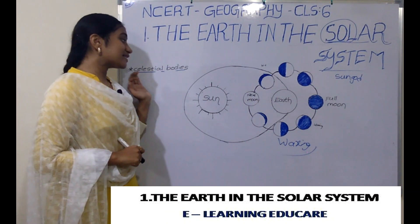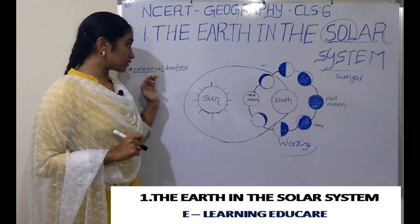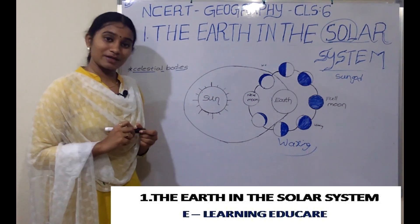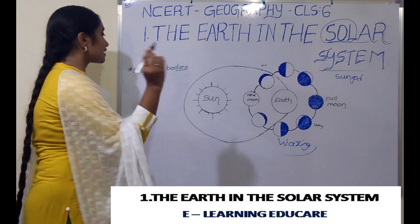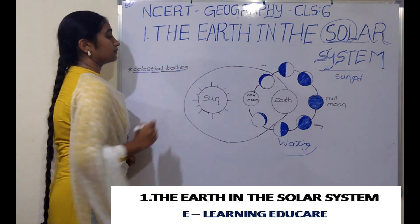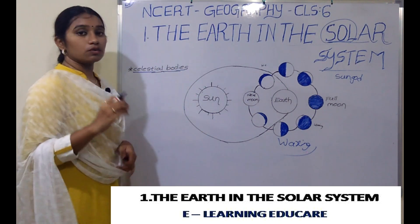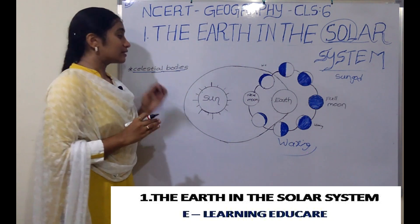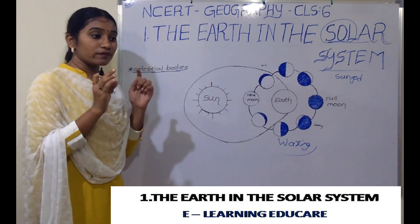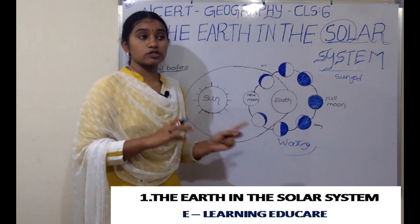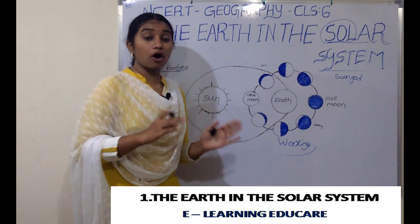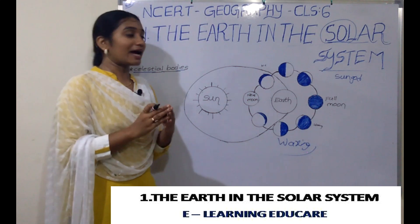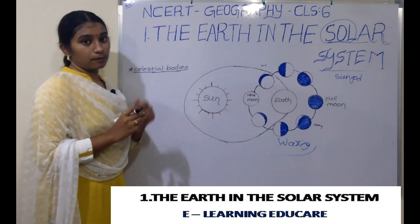The first topic we discuss is Celestial Bodies. So what we call Celestial Bodies are things which are positioned in or related to the sky and which are a part of the universe. That is what we call a Celestial Body.